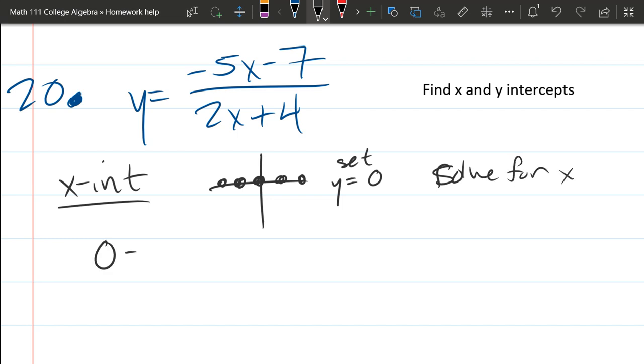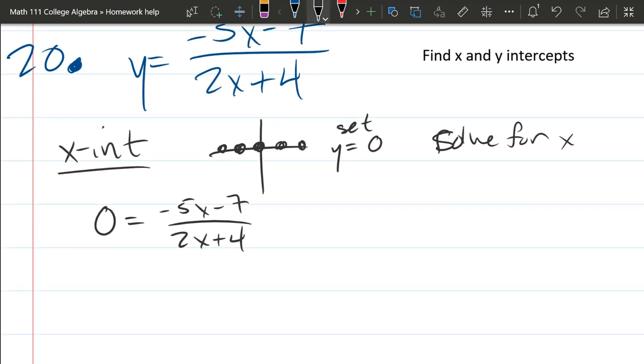So y is zero. When we solve for x, x appears in two places, once there and once there. I don't like fractions, so the first thing I'm going to do is multiply by the denominator, by 2x plus 4.